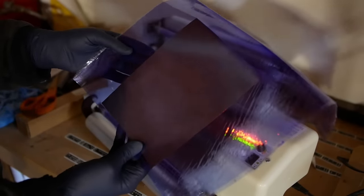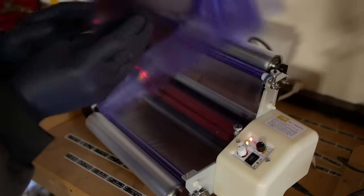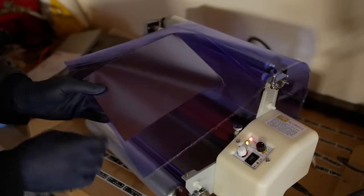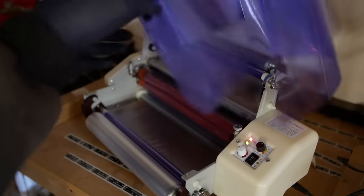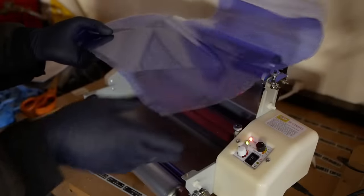There we have it. Not bad at all. So what we have is the hard protective layer, then the photoresist, then the metal, then on the other side more photoresist and another hard protective layer.